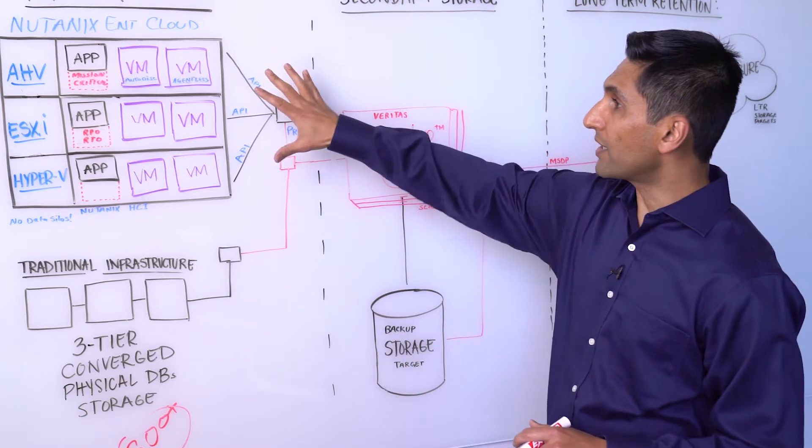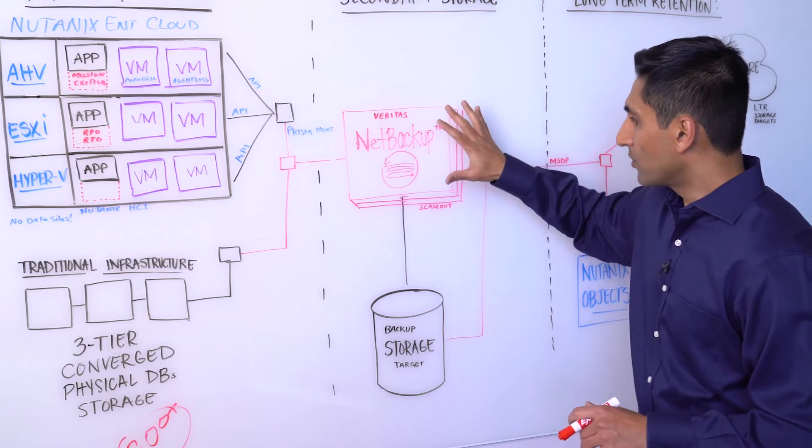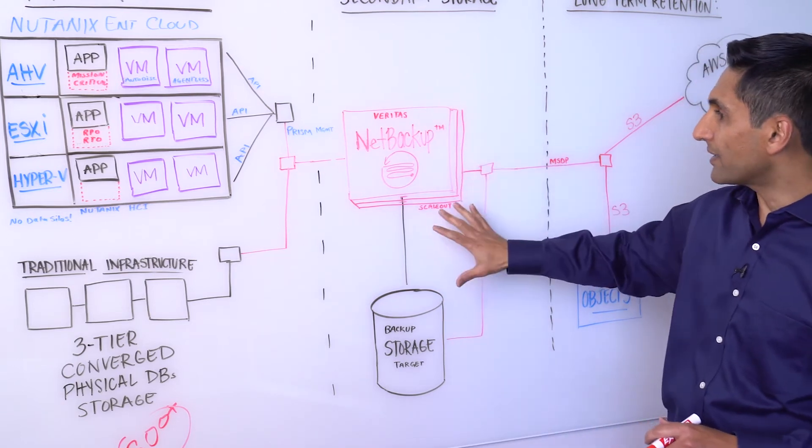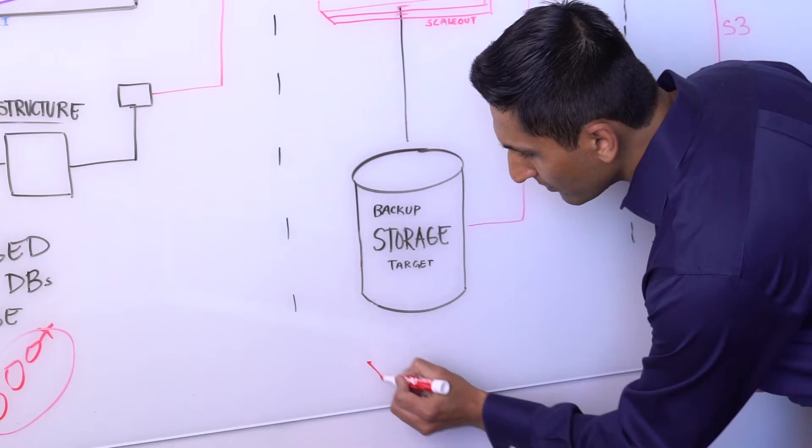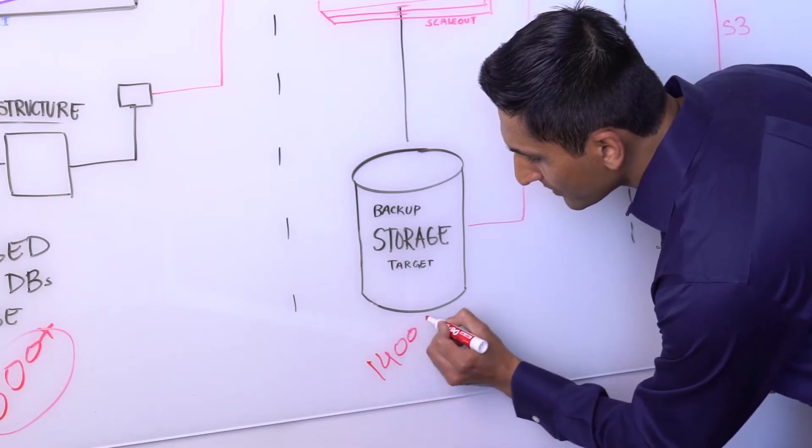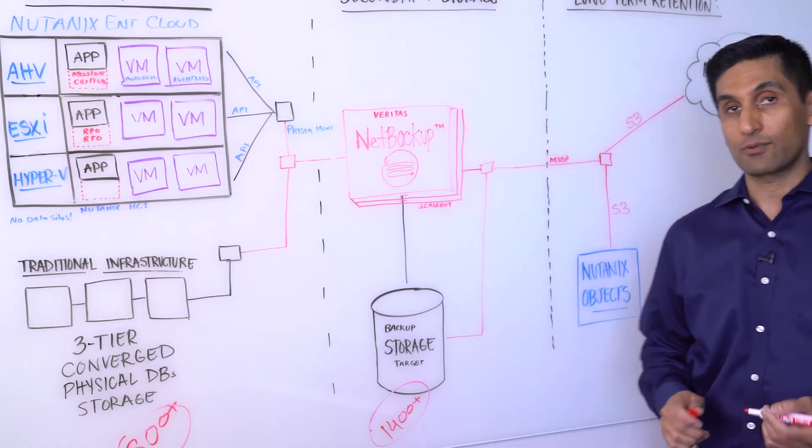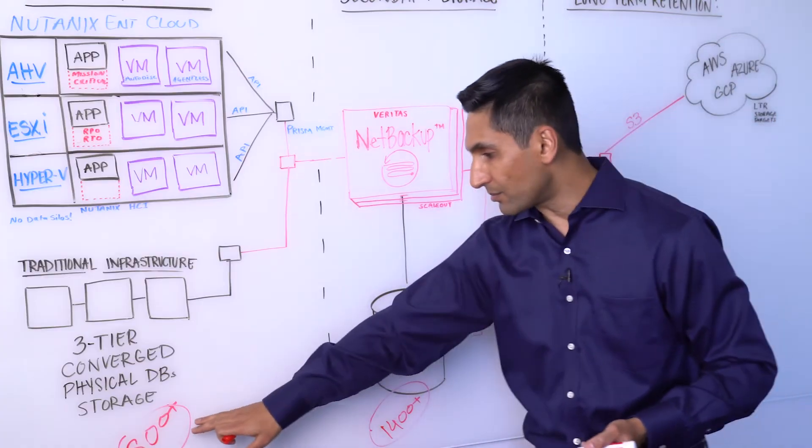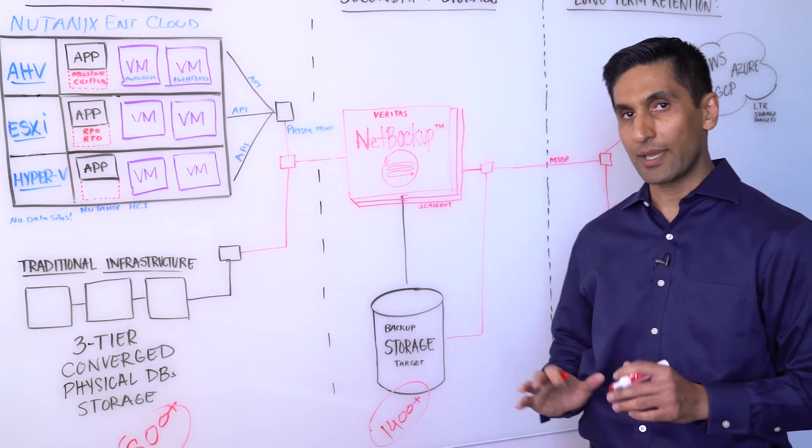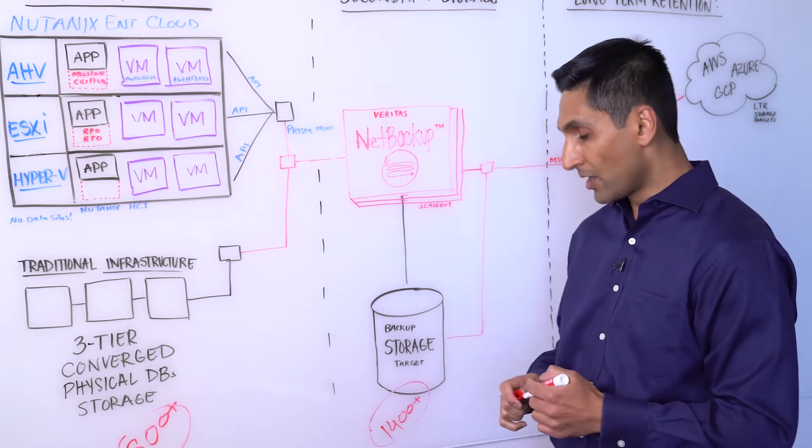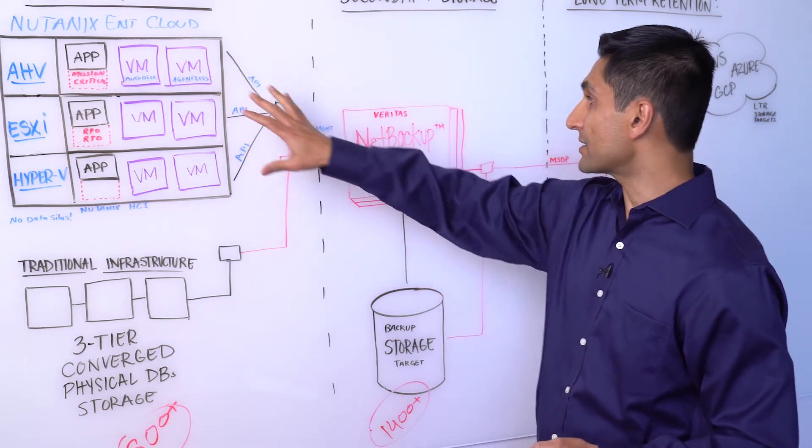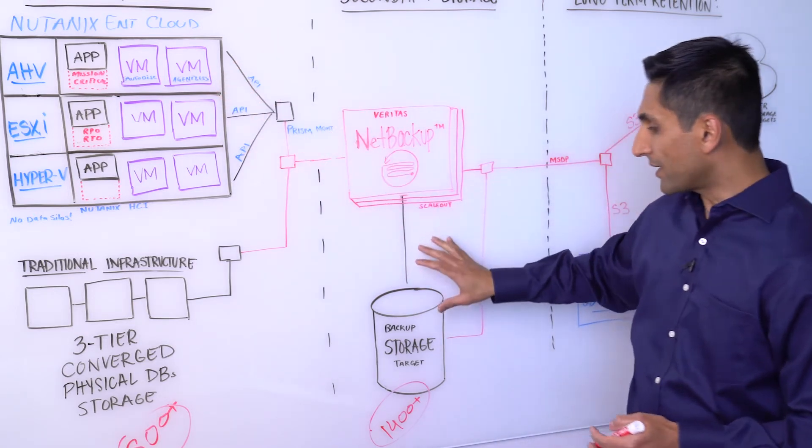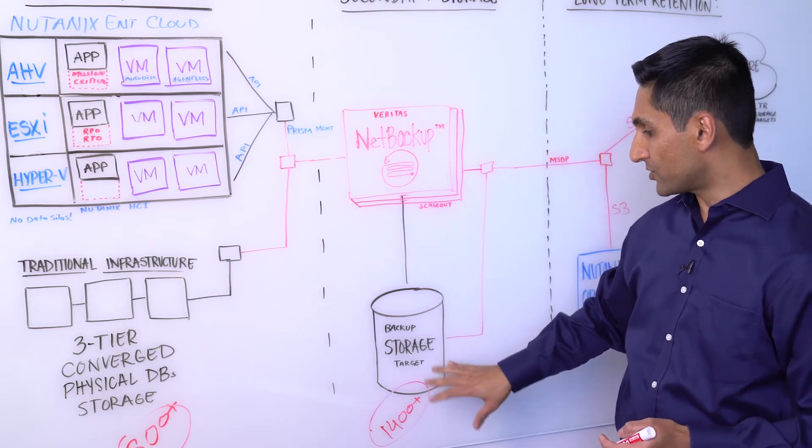Now, once we protect Nutanix Enterprise Cloud, the next step will be backing up that data in a storage target. In fact, it will be any one of the 1,400-plus storage targets that we support. Again, just like this number, this is also unmatched by anybody else in the industry. So this is unique to Veritas. So this is our first use case. We're protecting Nutanix Enterprise Cloud using NetBackup and backing it up in one of the 1,400-plus storage targets that we support.